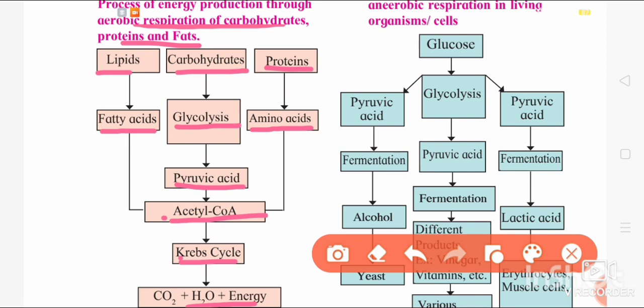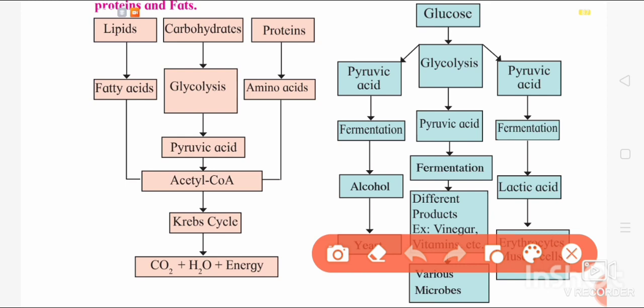This flowchart represents anaerobic respiration in living organisms. Anaerobic means in the absence of oxygen. In anaerobic respiration, glycolysis is common, but the pyruvic acid formed undergoes fermentation — the chemical breakdown of the molecule in the presence of microbes. During fermentation, different products can form, like vinegar and vitamins using different microbes, or alcohol using yeast, or lactic acid in muscle cells and erythrocytes (red blood cells).